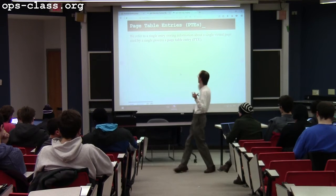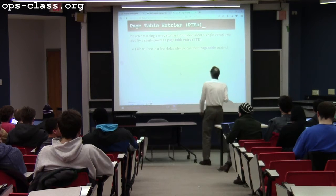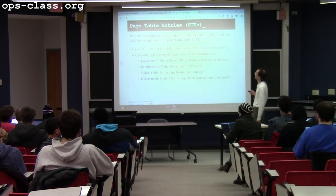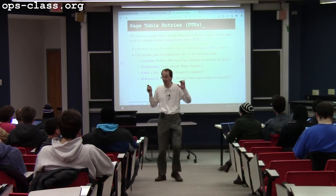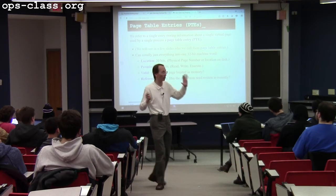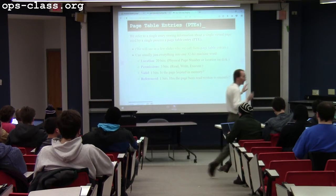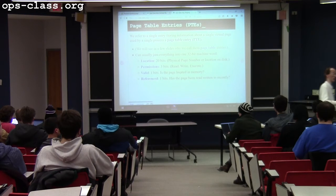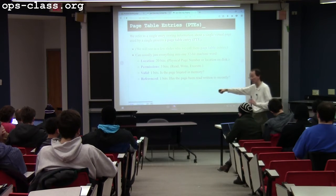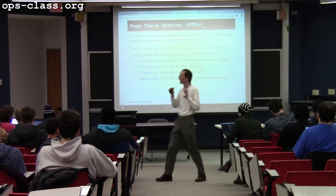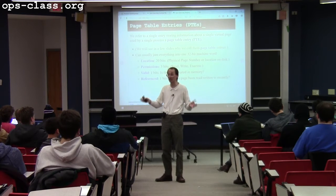Page table entries. Jeff is suggesting a particular model, but don't feel you have to follow it exactly. Remember Jeff's post about KISS — keep it simple. Sit down with your partners and design what to put into these page table entries — come up with what you think you'll eventually need, but start simple. What do I need to get started? Same thing is true with the core map. Think ahead so you're not painting yourself into a corner.